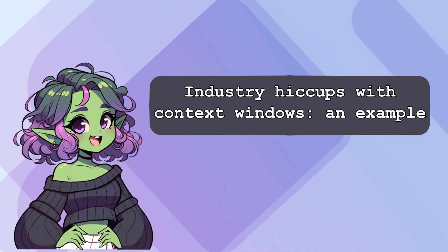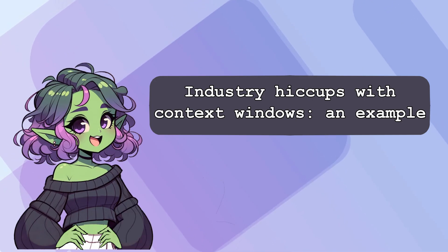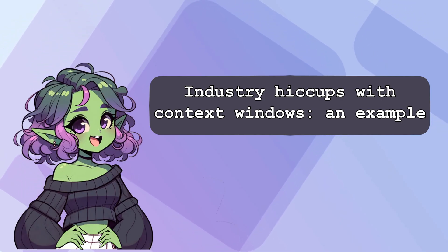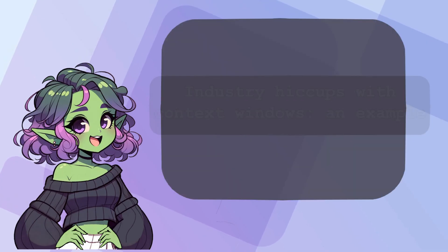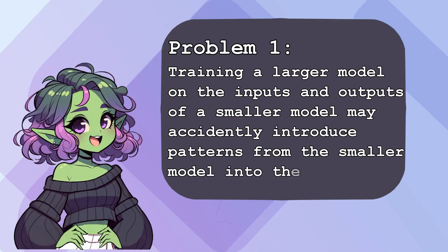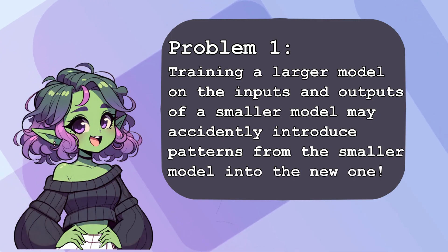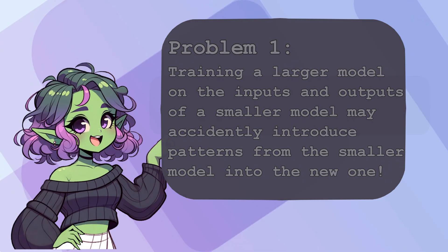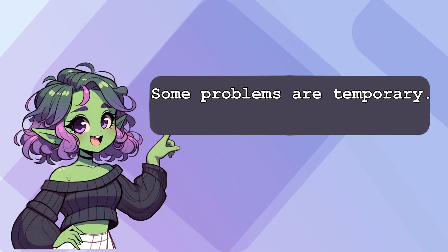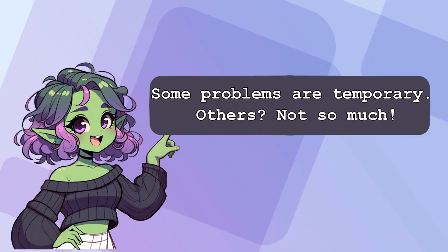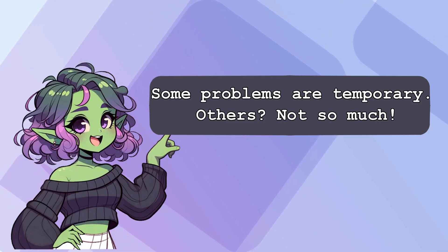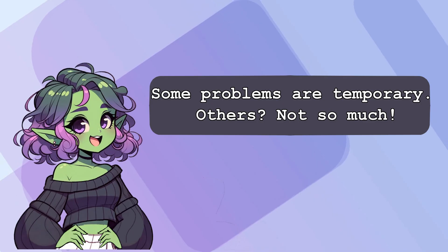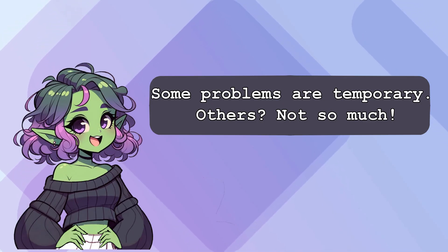Let's imagine you're an AI provider. You've built a solid 8k context model, but now the public is clamoring for 32k or even 128k models. You develop the larger model, but it has some flaws. If you train your new 32k model based on outputs from your 8k model, you might unintentionally make it favor a similar structure — instead of using the full 32k context it was built to take advantage of. Your team keeps pushing forward and manages to make some corrections, even as competitors rush to market with their own 32k and 128k models.